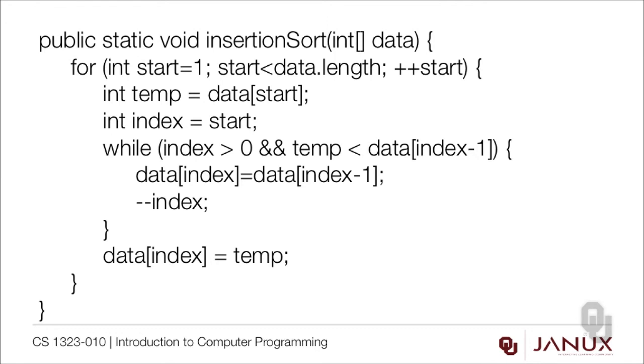Now while the index is greater than 0, so that's making sure we don't step off the beginning part of the array, and temp is smaller than the data at the index, we move the data over. So that's the step that we're seeing most of the time. Then we subtract 1 from the index. When we get to the end of the loop, we move the temp value into data of index.